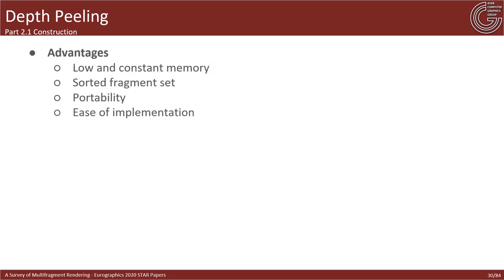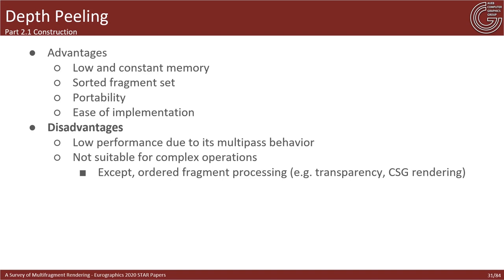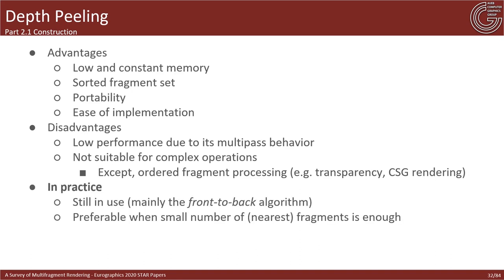The main advantage of depth peeling methods is their low and bounded memory requirements. They do not need post-sorting, support older hardware, offering increased portability and ease of implementation in diverse architectures. On the downside, they can become very computationally expensive due to overhead imposed on the geometry processing stage for large numbers of iterations. Moreover, they are mainly suitable for applications that rely on sequential fragment processing like transparency. Nevertheless, depth peeling algorithms are still widely used and are the optimal choice when sufficient visual quality can be achieved by processing only a small number of fragments.